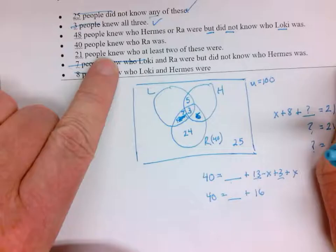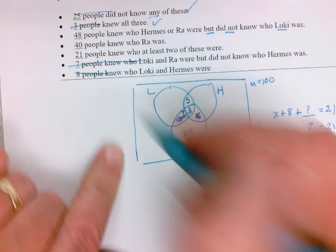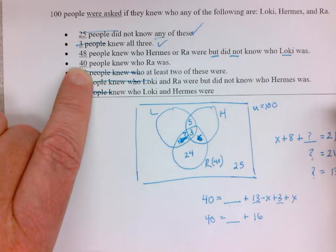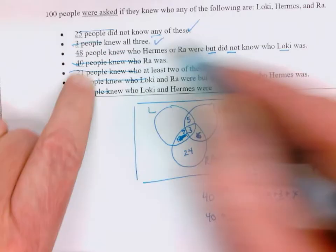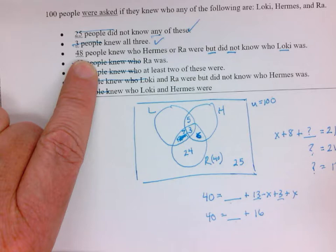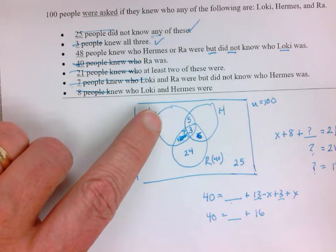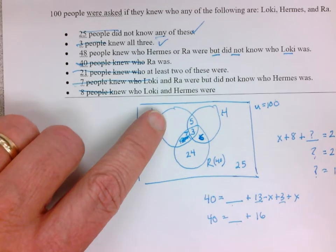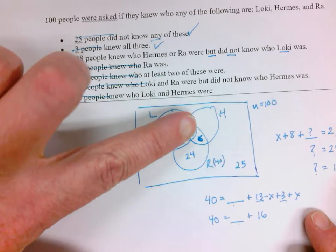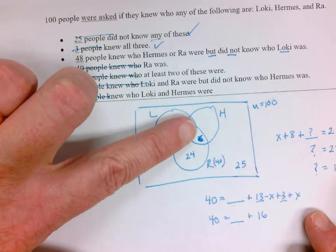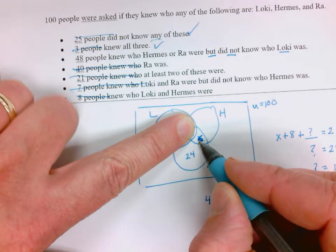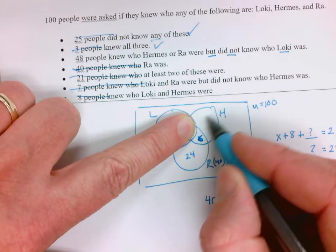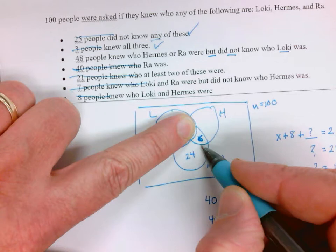We used our little 7 fact. 21 people knew at least two - we already used that, so that's gone. 40 people knew Ra - we already used that. So we got to get this 48. 48 people knew Hermes or Ra but not Loki. So Hermes or Ra is there, but not Loki. Those 24 plus 6 plus this have to add up to 48. Well, 24 plus 6 is 30, so this is 18.